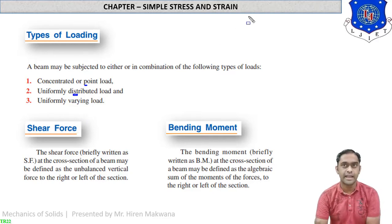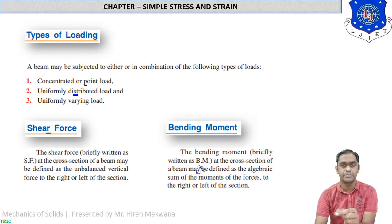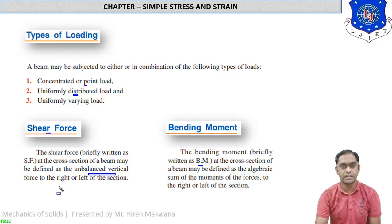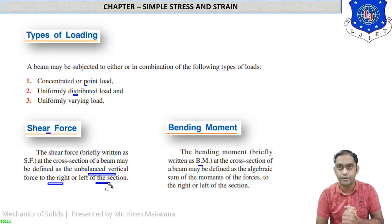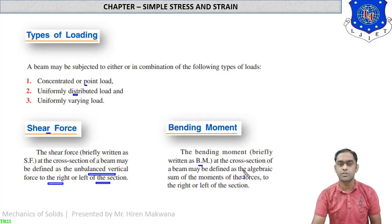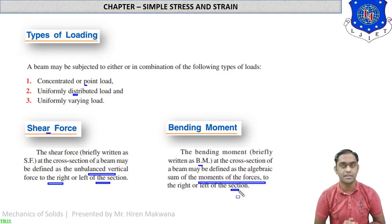Now let us define shear force and bending moment. Shear force (SF) at the cross section of a beam is defined as the unbalanced vertical force to the right or left of the section. Bending moment (BM) at the cross section of a beam is defined as the algebraic sum of moments of the forces to the right or left of the section — that is, the algebraic summation of plus or minus moments on either side of the beam section.